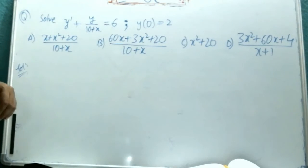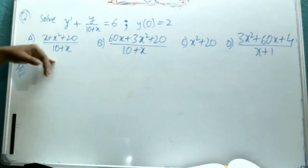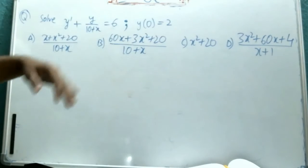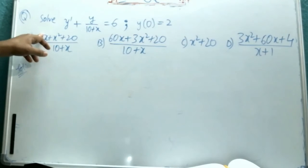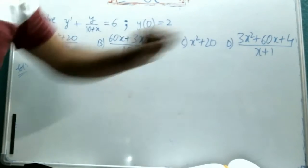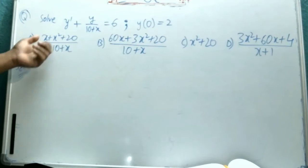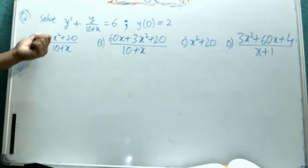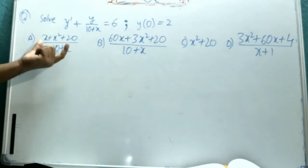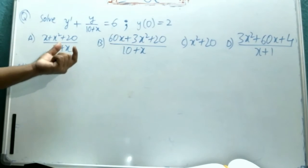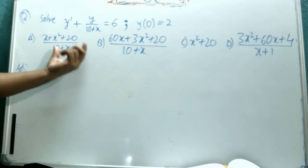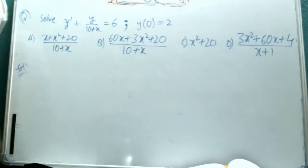For that we need to find the solution. There are two ways. Since options are given, find y dash for each and everyone. This is y. You take it as an equation y equal to so and so. Differentiate it, y dash we get. Then y dash plus this y by 10 plus x, you will find it. If it is coming RHS value that is 6, that particular one is the answer. That is one way.